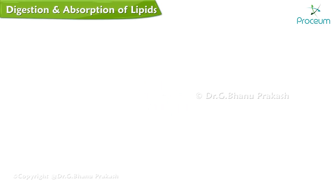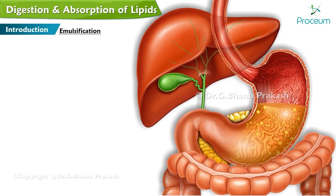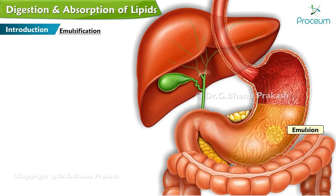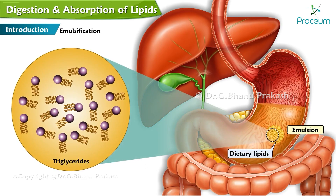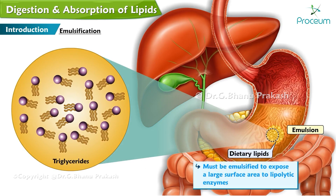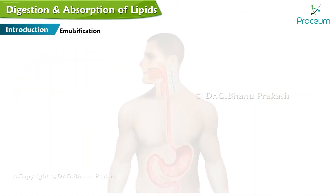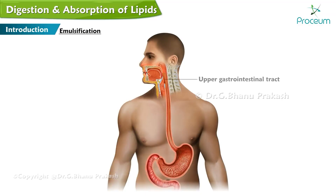Digestion and Absorption of Lipids. The process of fat digestion begins by the generation of a suspension of fat in water, known as an emulsion. Dietary lipids, consisting mostly of triglycerides, must be emulsified to expose a large surface area to lipolytic enzymes. Emulsification begins in the upper gastrointestinal tract through mastication and gastric mixing.